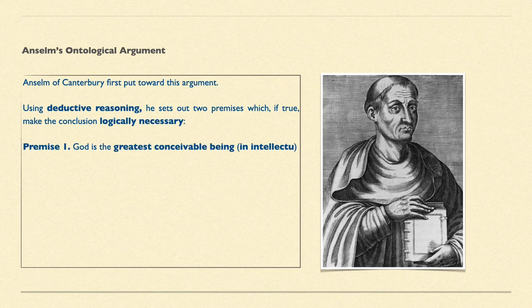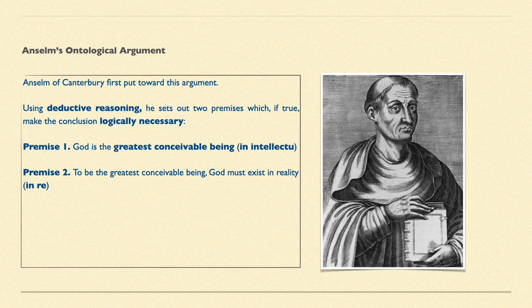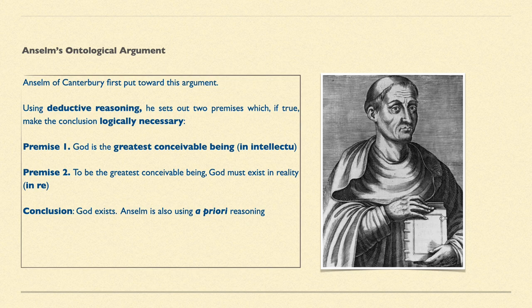So his argument in its basic form: premise one is that God is the greatest conceivable being, or the GCB. In Latin, in intellectu — this is the idea that God is the greatest being you can possibly think of in your mind. Premise two: to be the greatest conceivable being, God must also exist in reality — in Latin, in re — not just in the mind. And therefore the conclusion clearly follows: God exists.